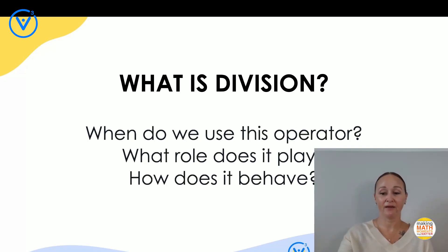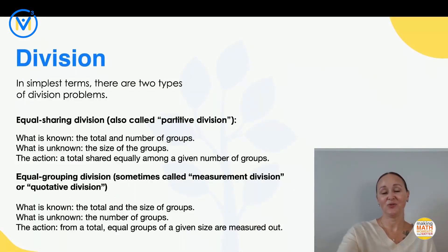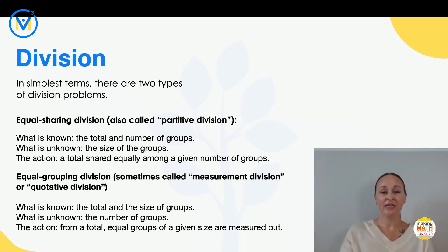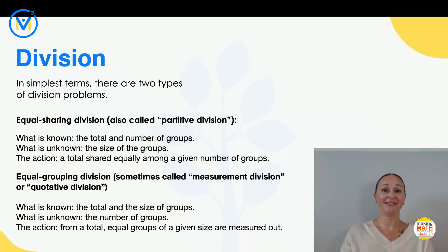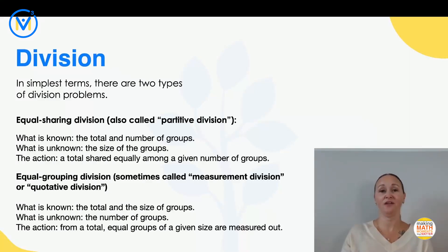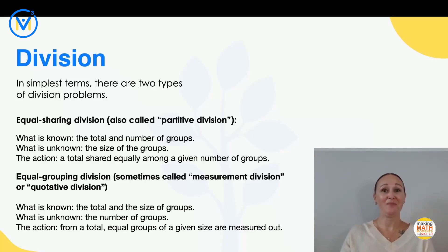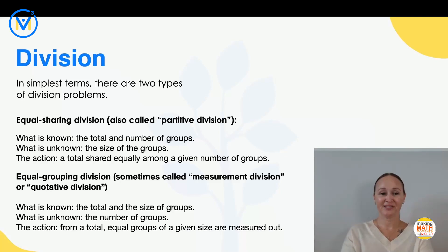So we're going to take some time to really unpack what division does. In the Ontario curriculum under the teacher supports in grades three and four, they're super explicit about division, and they say in simplest terms there are two types of division problems. In Van de Walle's book, he mentions there are essentially four structures for multiplication and division, and maybe in a future episode we'll dive into the others. But for today, we're going to be looking at these two types: equal sharing division — that's the fair share scenario — as well as equal grouping division, or measurement quotative division.